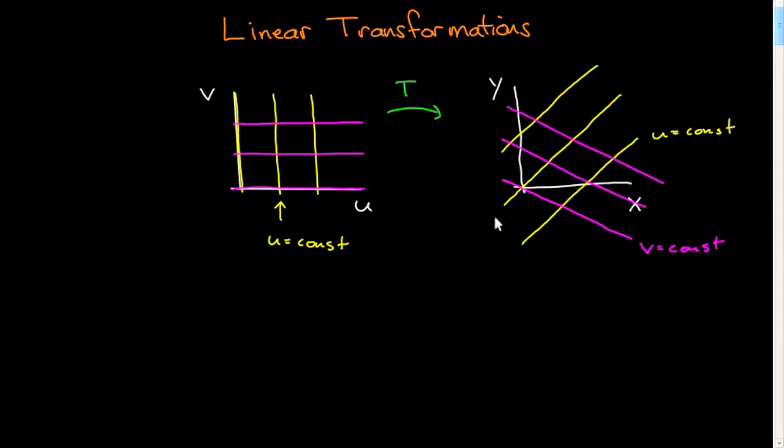And the point is you can tell a lot about the transformation, about the geometry of the situation simply by looking at this set of curves. So here I have a regular rectangular grid in uv, and this will get mapped by my transformation into some still regular grid, but skewed in some way.